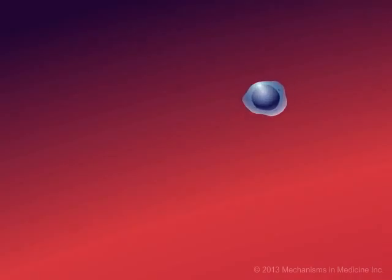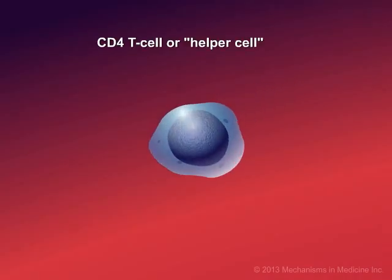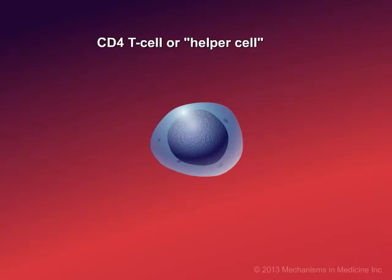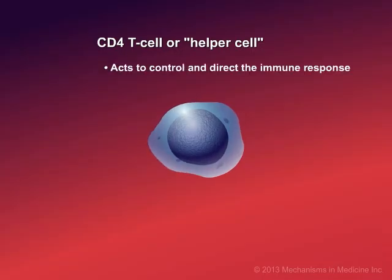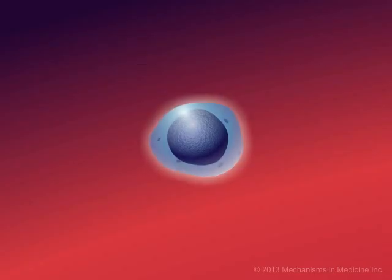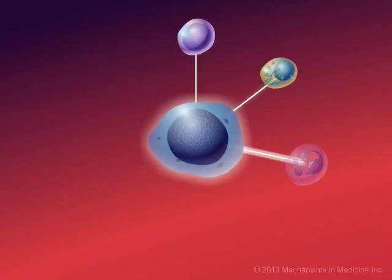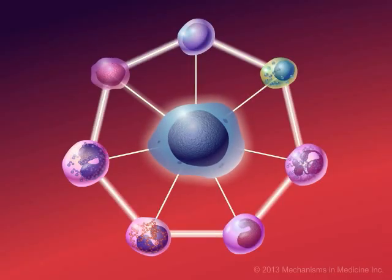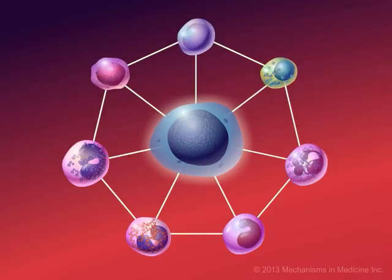A type of white blood cell is the CD4 T-cell lymphocyte, or helper cell, which acts to control and direct the immune response. The CD4 cell is an important cell in the immune system because it coordinates all the other immune cells.